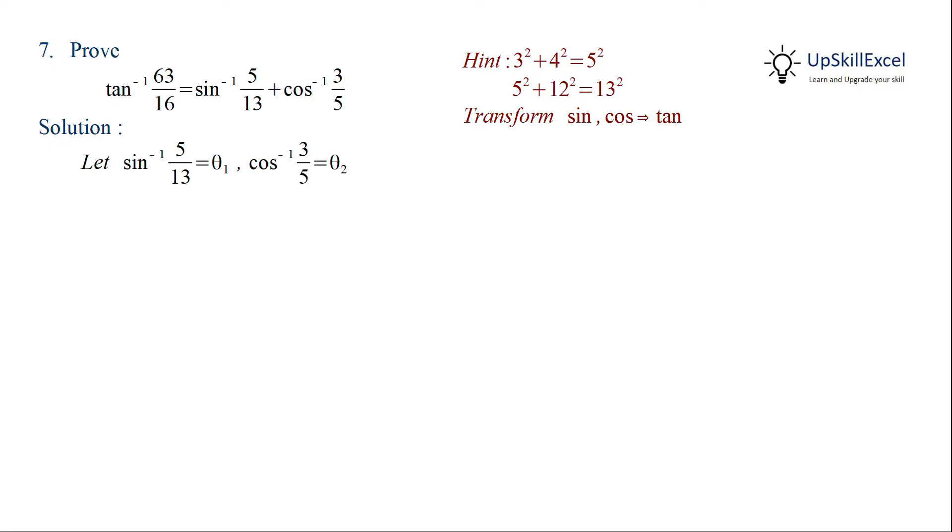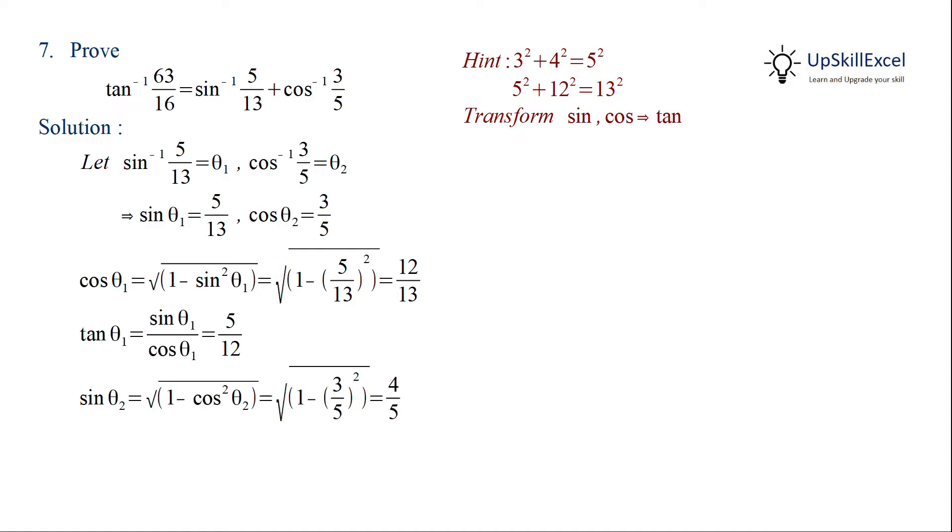So let's start by assuming sin inverse 5 by 13 is equal to theta 1 and cos inverse 3 by 5 is equal to theta 2. From this we can find out cos theta 1, tan theta 1, sin theta 2, and tan theta 2.